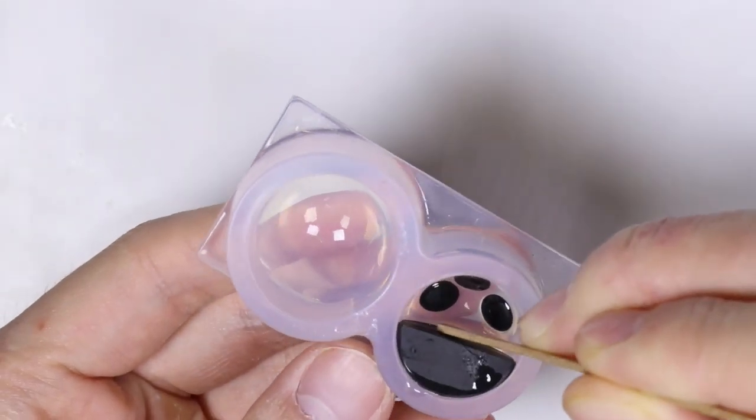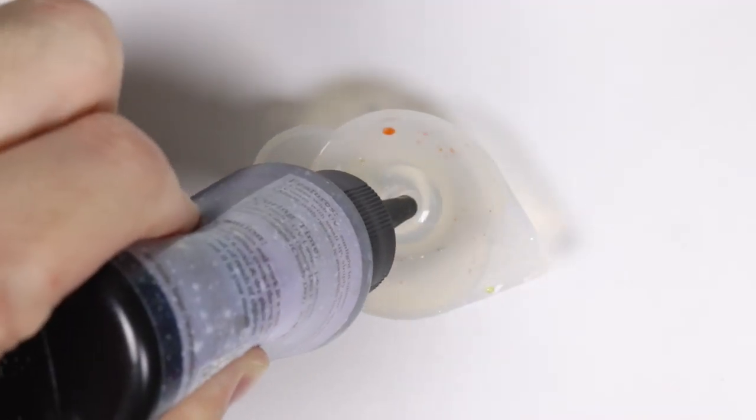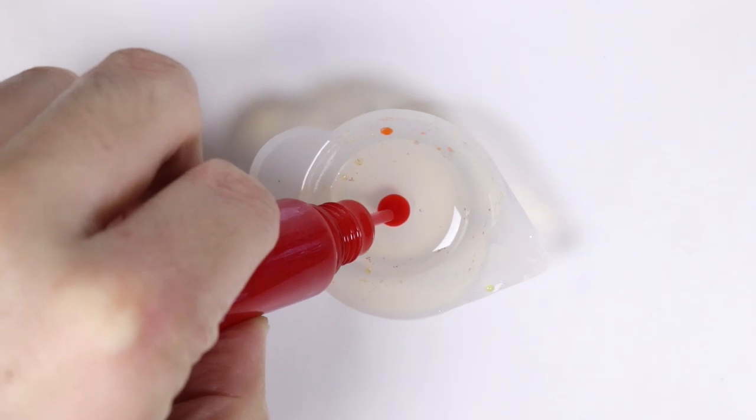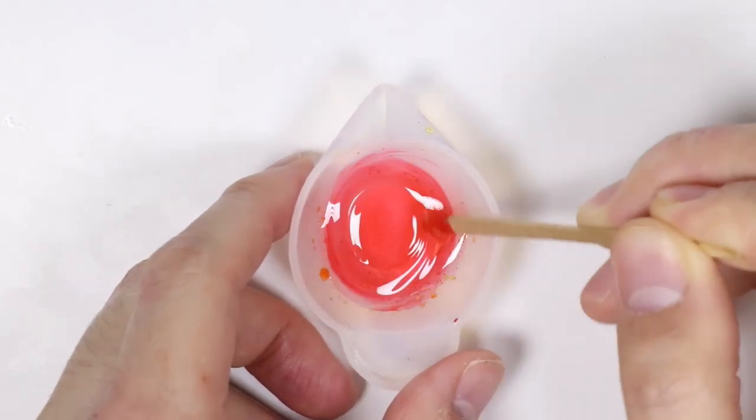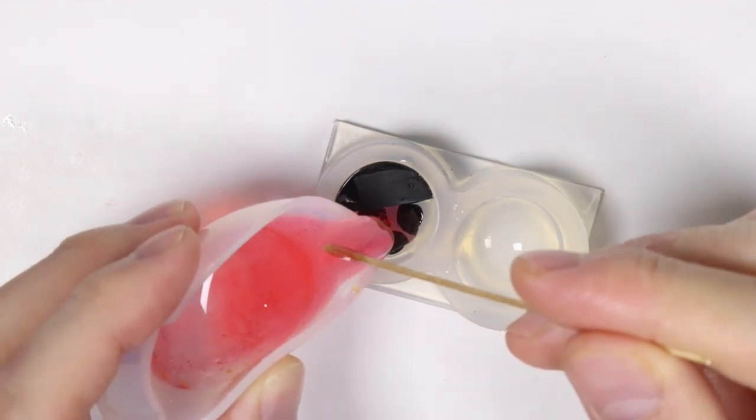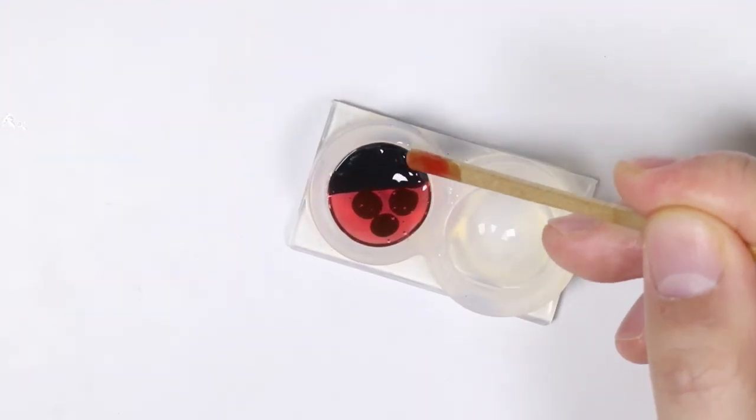And before I cure under the UV lamp, I'm just rearranging it with a toothpick. Next I'm going to take some UV resin, pour it into a little container and add some red pigment into it and mix it. And we're going to use this to fill in the rest of the mold. And once filled, we want to cure it under the UV lamp.